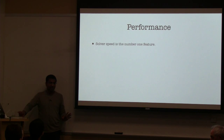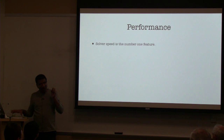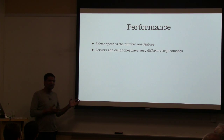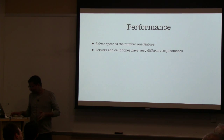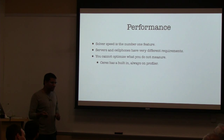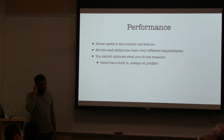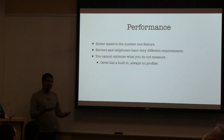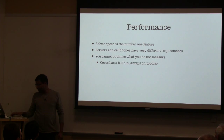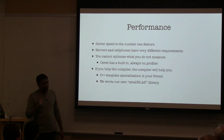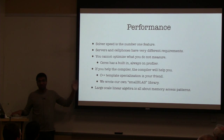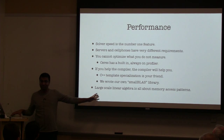Speed is a feature — if your solver is slow, nobody will use it. Servers and cell phones have very different requirements: throughput versus latency. If you don't measure it, you cannot optimize it. Ceres has a profiler built in that runs all the time. If someone says the solver is slow, turning a flag on dumps profiling information showing exactly where time is going. And help the compiler: linear algebra performance is all about memory access patterns, not clever instructions — how you traverse memory determines how fast your linear algebra will run.